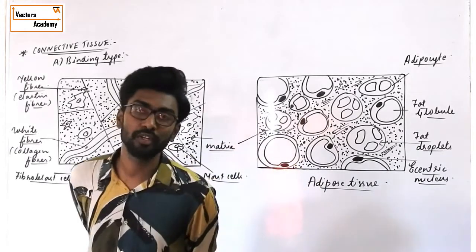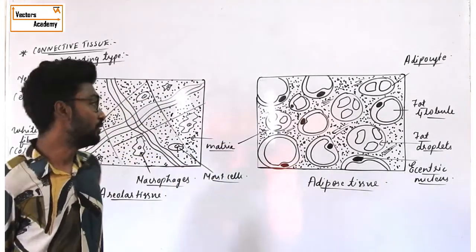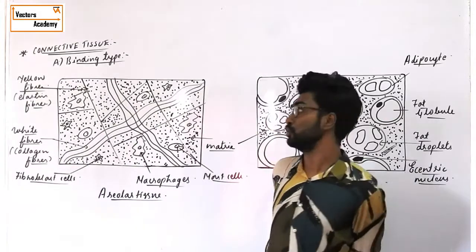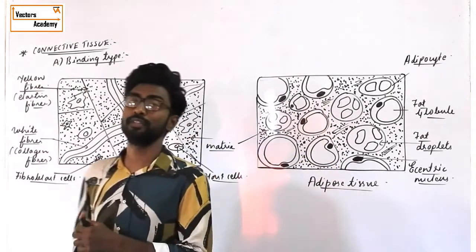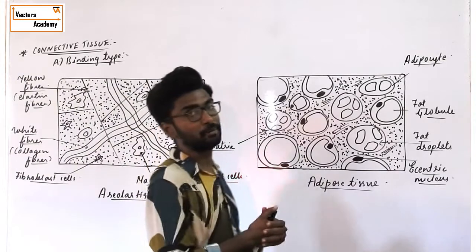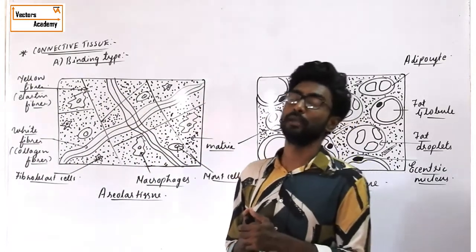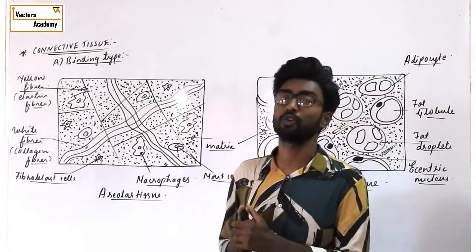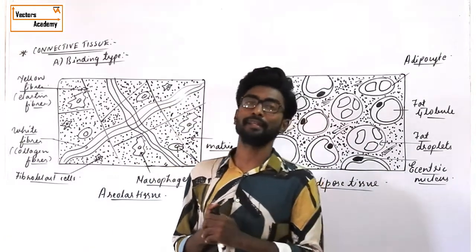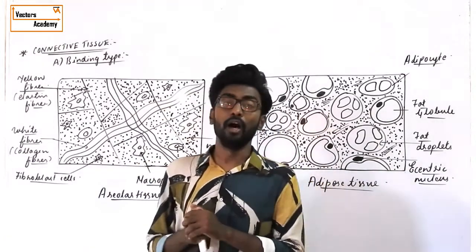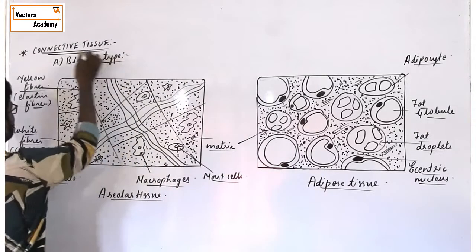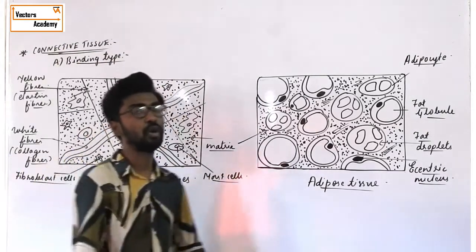Good afternoon students. Today we are going to study the next topic, which is connective tissue. Before this, we completed epithelial tissue — 5 different types: squamous epithelium, cuboidal epithelium, columnar epithelium, ciliated epithelium, and glandular epithelium. Now today we are going to start with the next type of tissue, that is connective tissue.